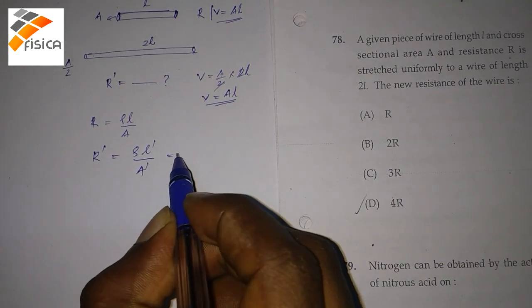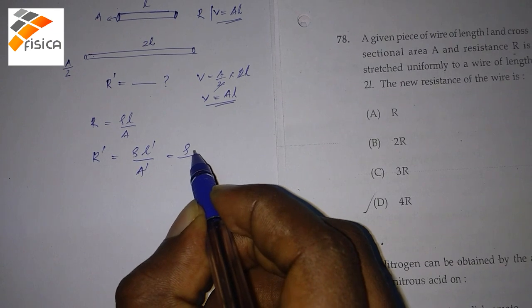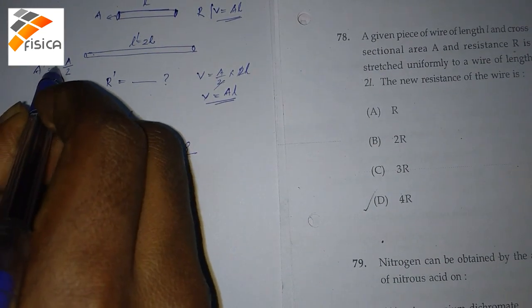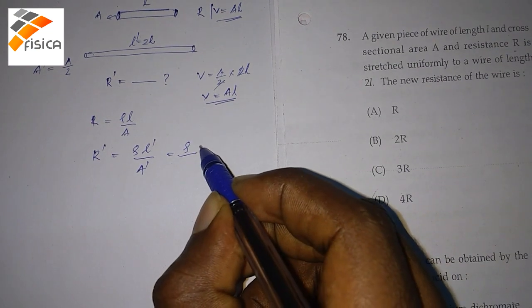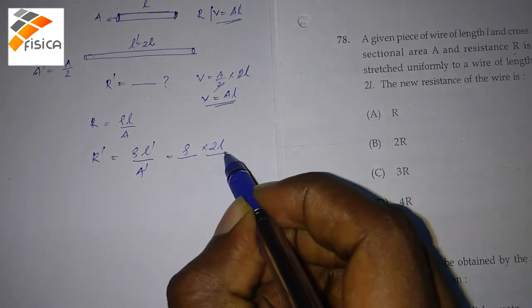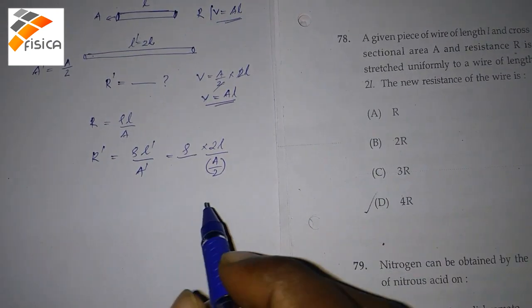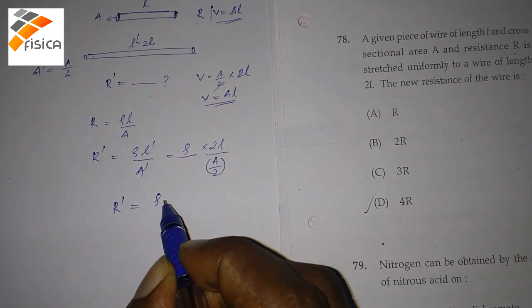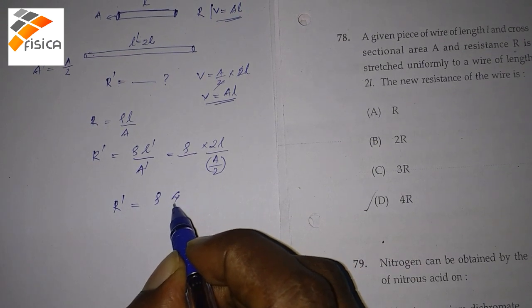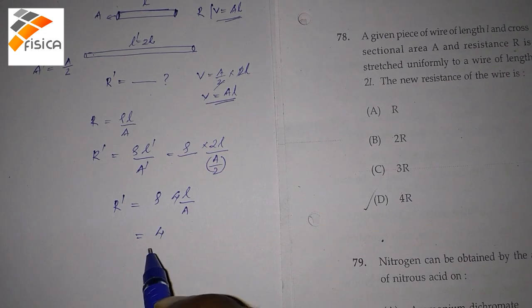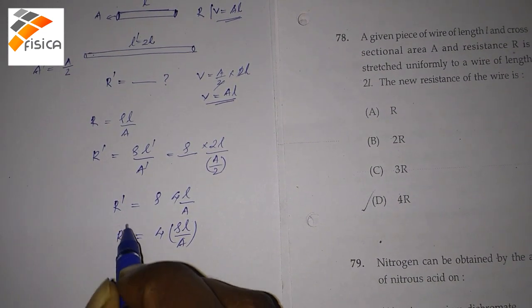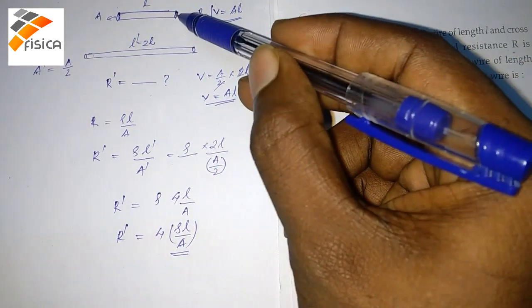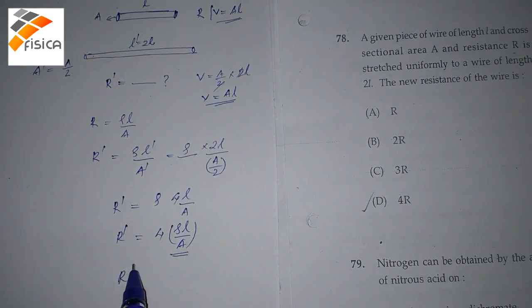Now, what is the new L prime and the new A prime? L prime is 2L. And new area, A prime is equal to A by 2. That is, R prime is equal to rho into 2L divided by A by 2. That is, R prime is equal to rho into 4L by A. That is equal to 4 into rho L by A. Now, rho L by A is nothing but the resistance of the first wire. So that is, R prime is equal to 4 into R.